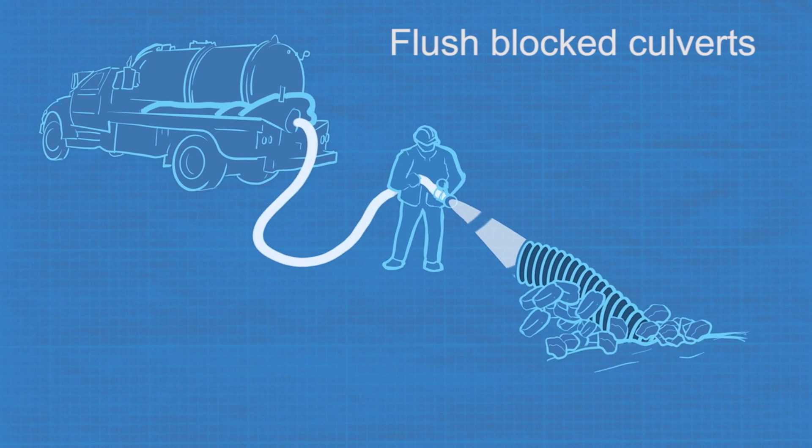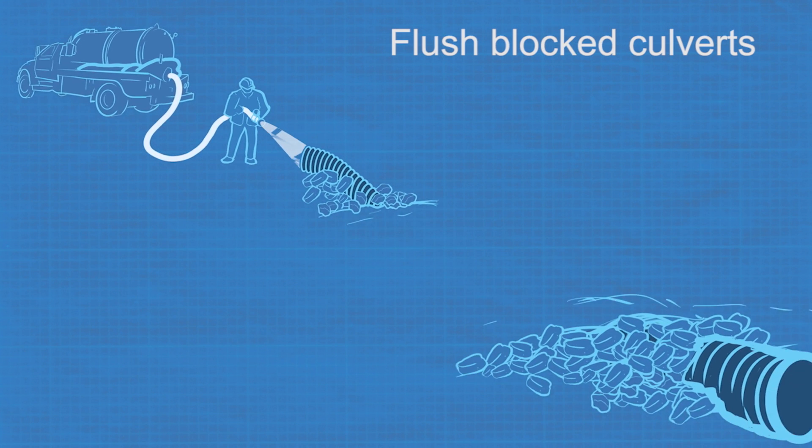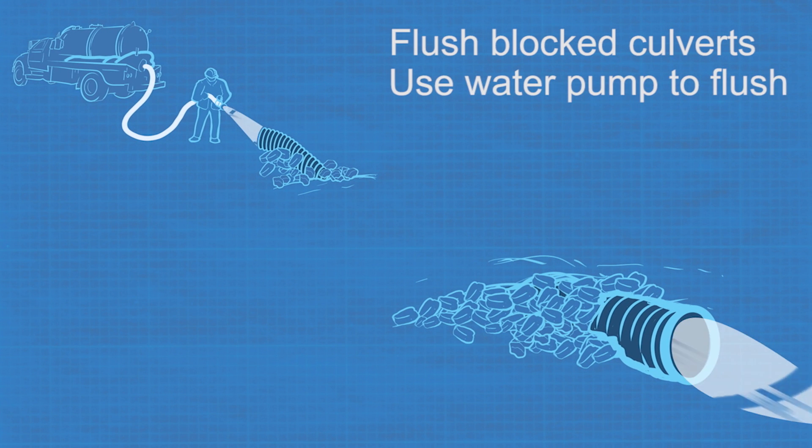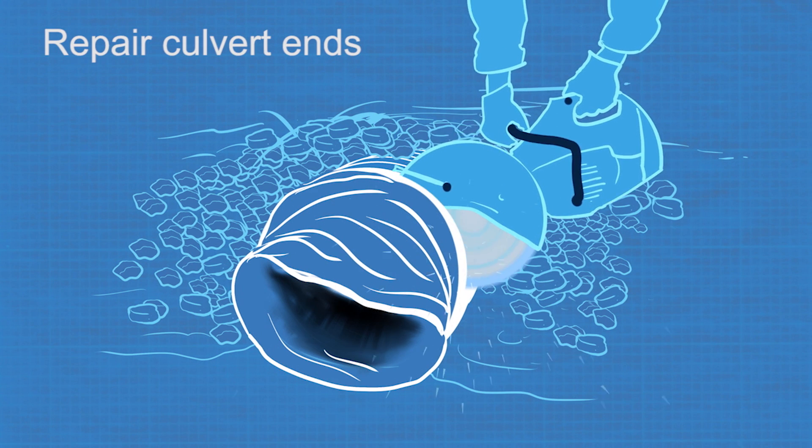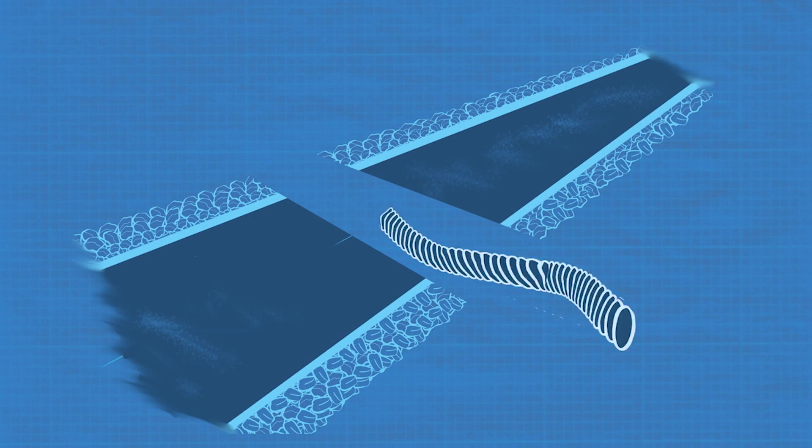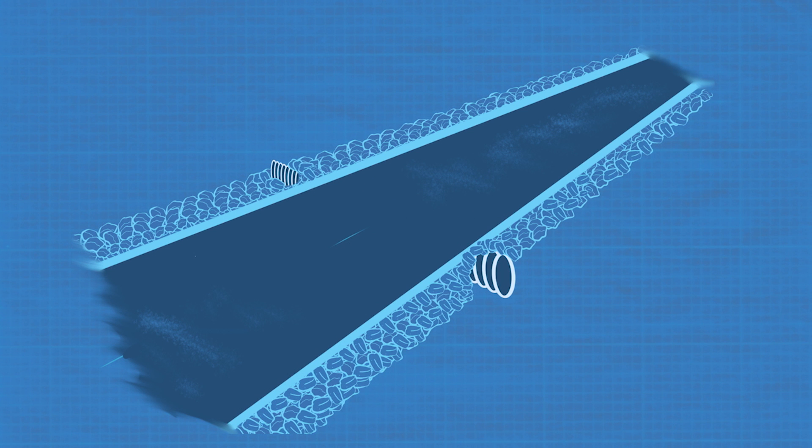Flushing blocked culverts to remove sediment, rocks and other debris. You can use a water pump attached to a water tanker to do this job. Cutting back, replacing or bending open collapsed culvert ends. Replacing or reinstalling any culverts that have shifted or moved.